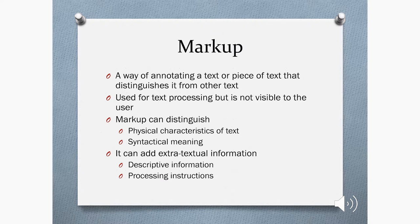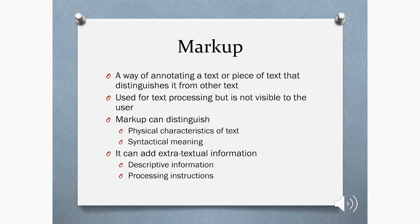Markup, on the other hand, is a way of annotating a text or a piece of text that distinguishes it from other text. It's used for text processing but it's not typically visible to the user. We use markup to distinguish any number of things: physical characteristics of a text — so is this piece of text bold or in italics? Is it in a paragraph or verse format? It can also be used for syntactical meaning, for example whether a piece of text is an adjective or an adverb. It can add extra-textual information, such as putting a note in the text, or processing instructions at the top of the file so that another program can further process the text.